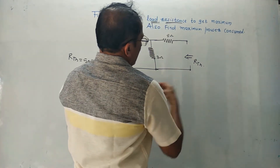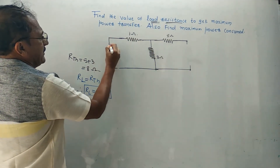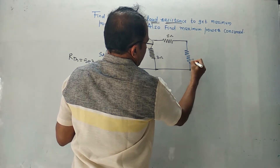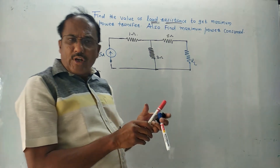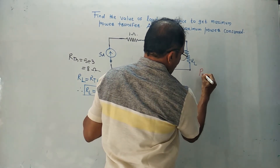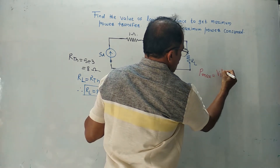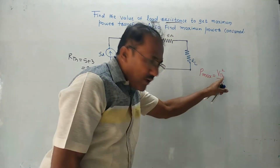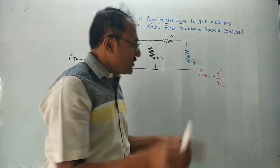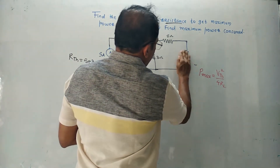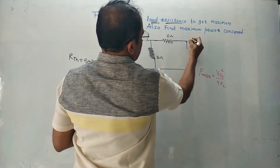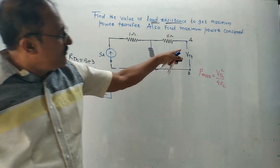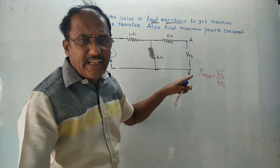For the second part, we consider the original diagram, which had a 5 ampere current source, with RL connected as the load resistance. Recall the formula: P_max equals VTH squared upon 4RL. We have already calculated RL equals 8 ohm. We now need to calculate VTH, the Thevenin's equivalent voltage. To calculate VTH, remove RL and mark these two terminals as points A and B. The voltage between A and B is VTH.